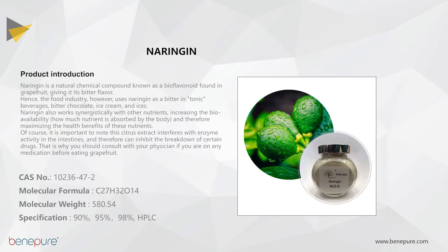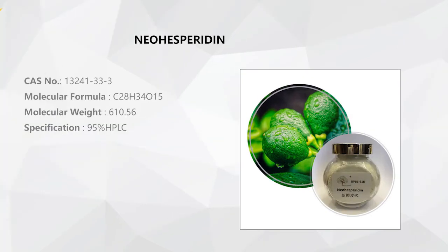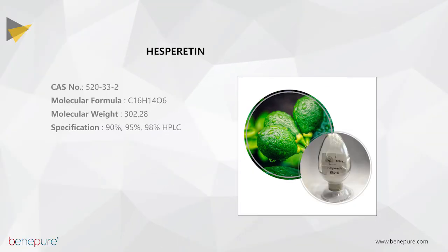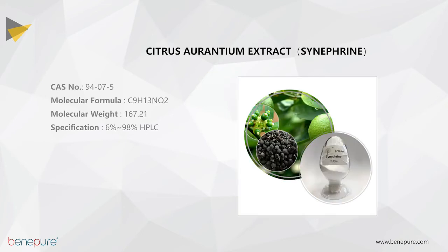Naringin is a natural chemical compound known as a bioflavonoid found in grapefruits. Given its better flavor, it is often used in beverages, bitter chocolates, ice creams and ices. For neohesperidin, it can be used as a sweetener. Other derivatives include hesperidin, citrus aurantium extracts for synephrine, and citrus bioflavonoids.